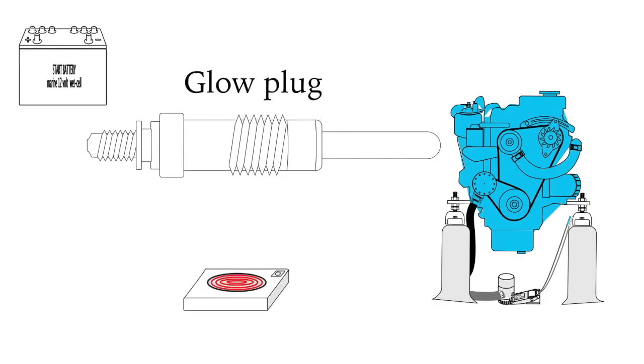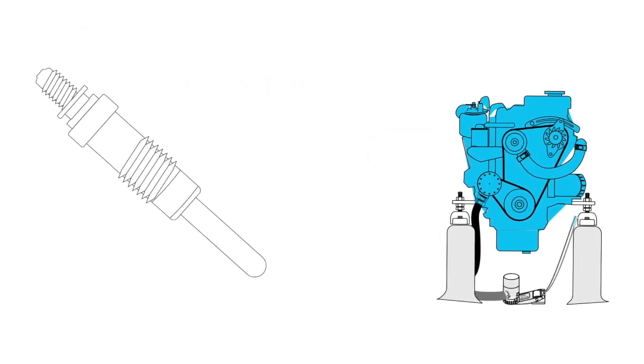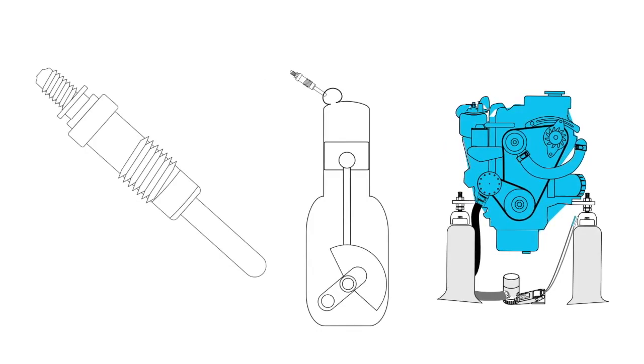We get around this by using glow plugs connected to a battery. Think of them as an electric heating element. The glow plug fits into the swirl chamber or the pre-combustion chamber or in a direct injection engine directly into the chamber.